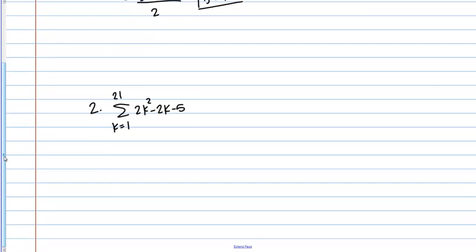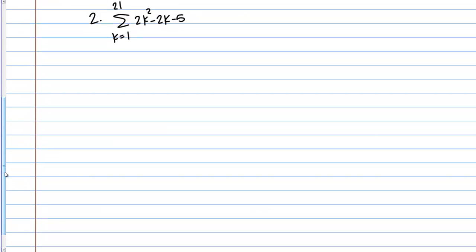Let's do one that's a little bit more complicated. We could have something that looks like this: the sum from K equals 1 to 21 of 2K squared minus 2K minus 5. If I were going to do this by hand, I'd start by plugging in K equals 1, then K equals 2, all the way up to 21, and add up all those values. That's a lot of work.